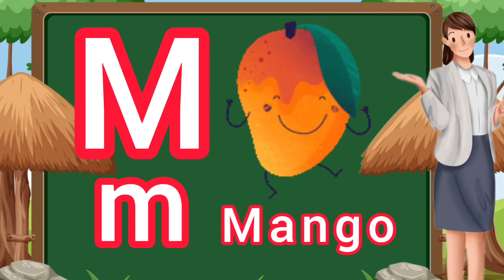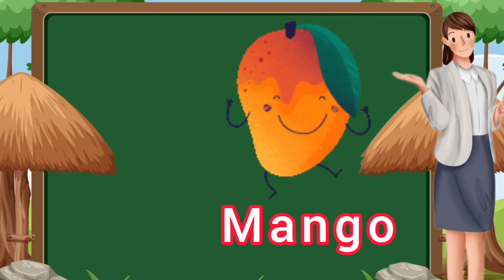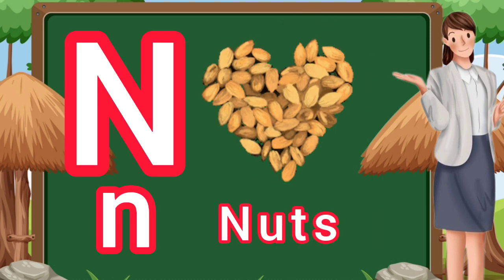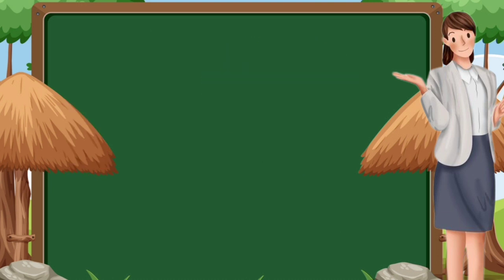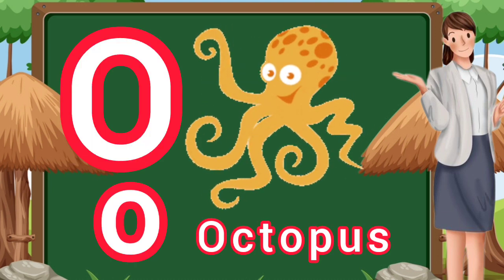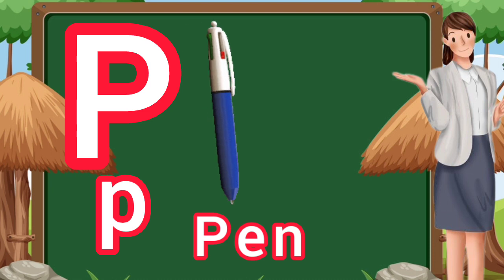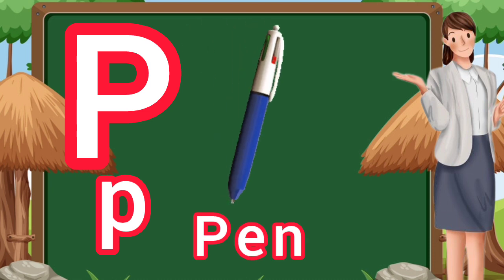M. M for mango. N. N for nuts. O. O for octopus. P. P for pen.